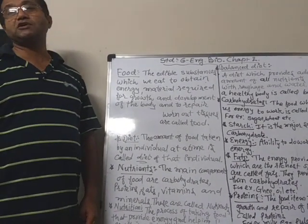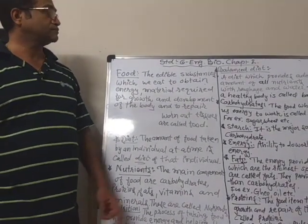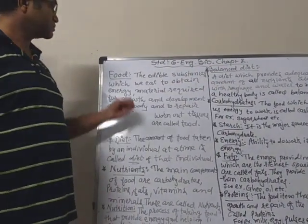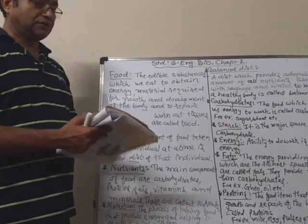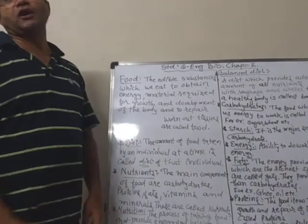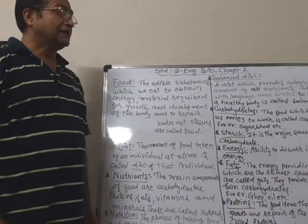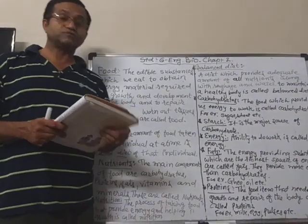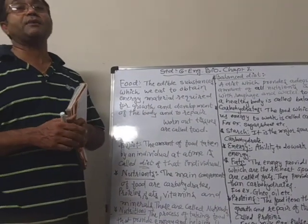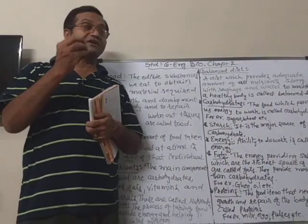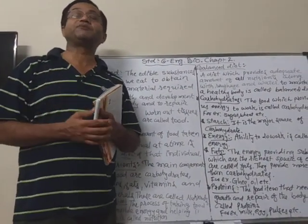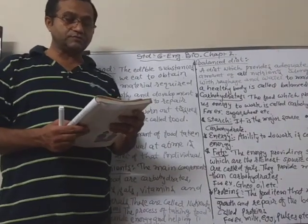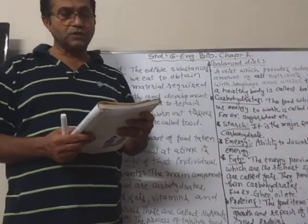Today we are going to start chapter 2 in biology: components of food. In chapter 1 we learned about some food items and ingredients.